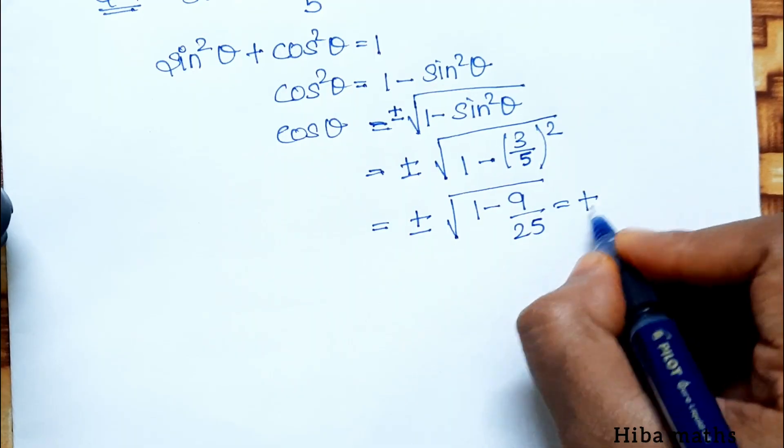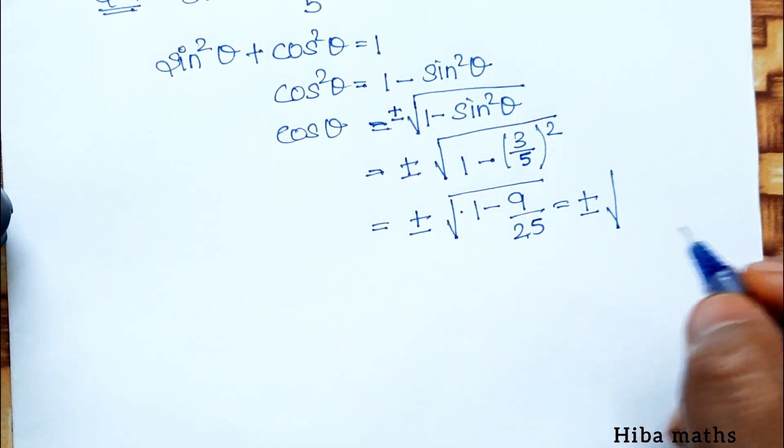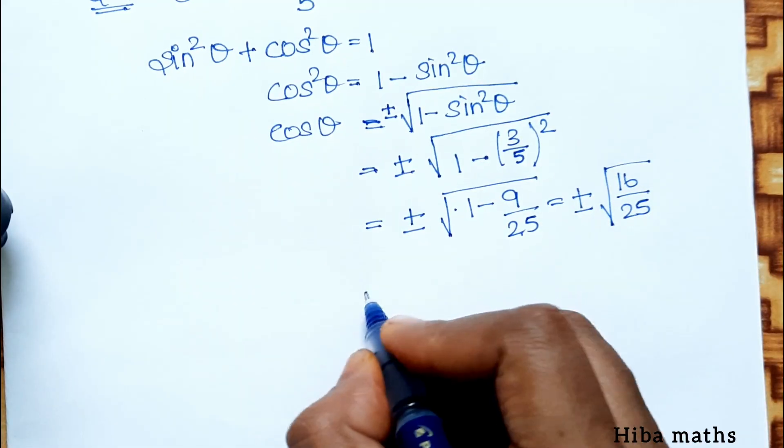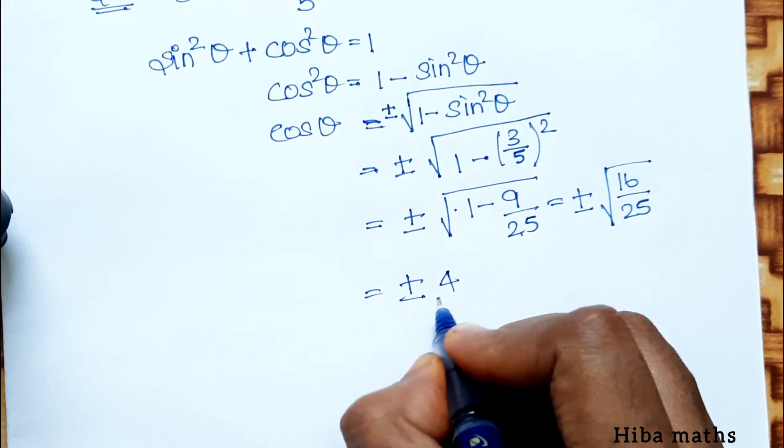That equals plus or minus... 1 squared is 1, so 1 minus 9 by 25 equals 16 by 25. Now, plus or minus 4 by 5.